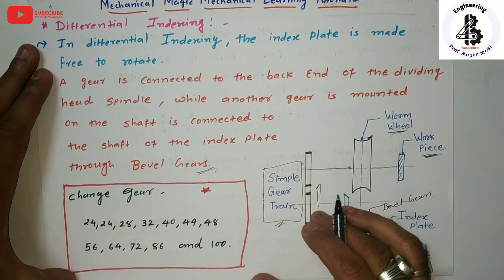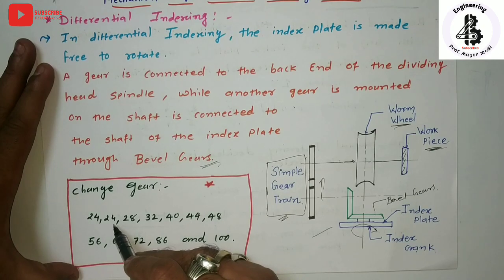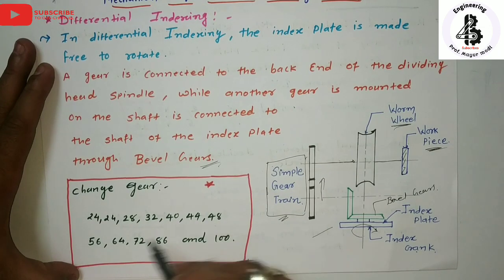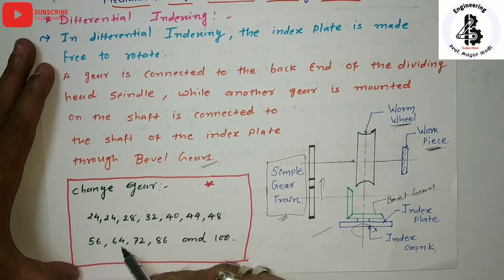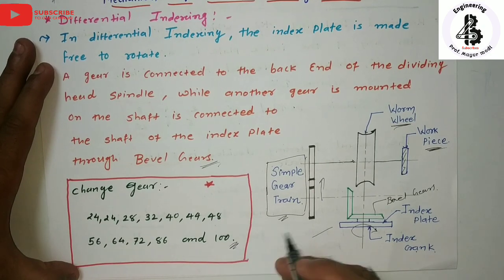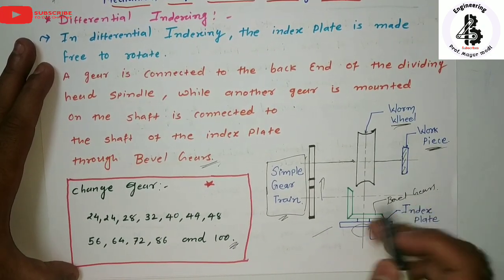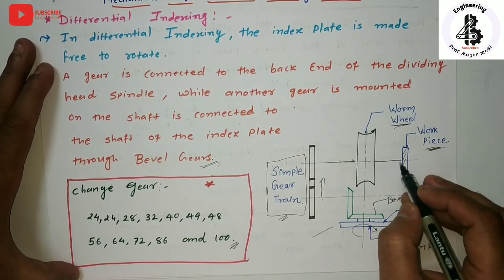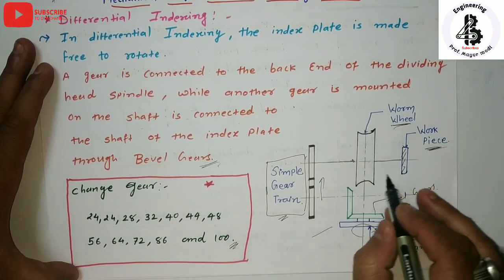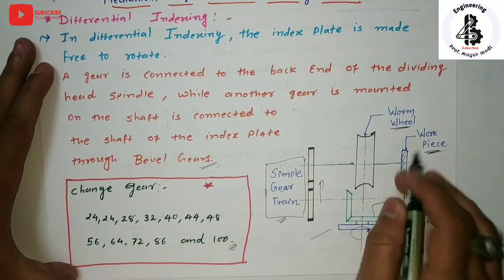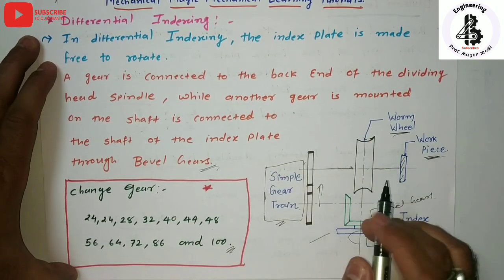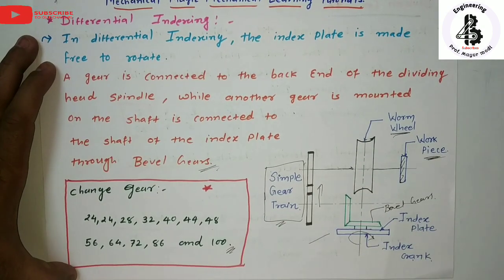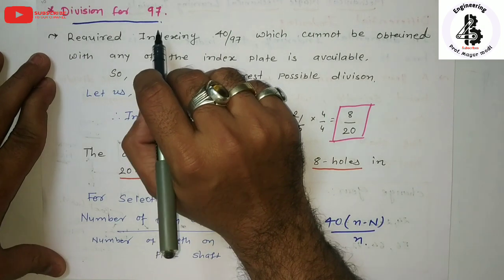For the simple gear trains we use standard change gears: 24, 24 (two sets), 28 teeth, 32, 40, 44, 48, 56, 64, 72, 86, and 100 number of teeth gears. These are used to make a simple gear train to convert motions into equal number of parts. This entire mechanism is called differential indexing, used to generate a required number of periphery divisions for manufacturing a gear.